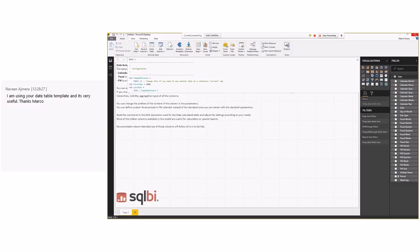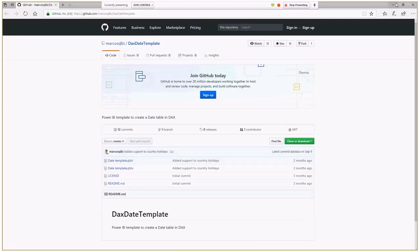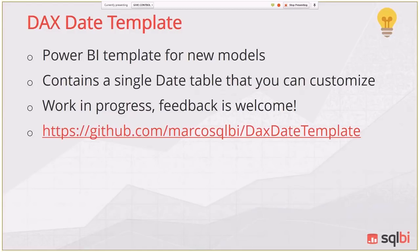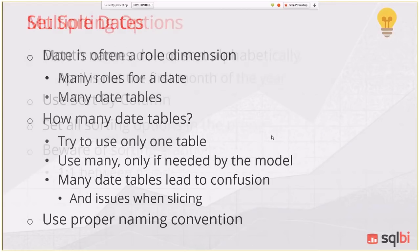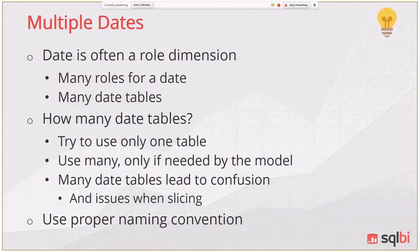Let me check if there are questions so far. Someone is already using the date template — very glad to hear that. Moving on: when you have a column containing names like month names, you must sort it by a number using Sort by Column. Now I'll show the alternative approach: using multiple date tables when you want to correlate two dates in the same report.